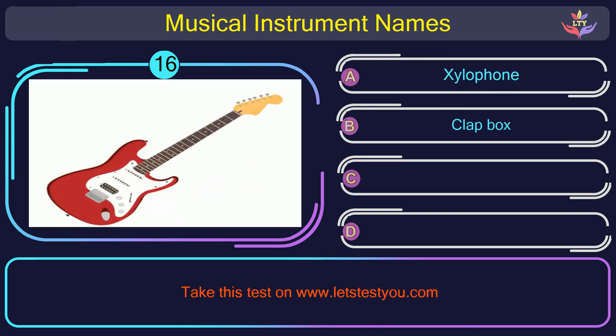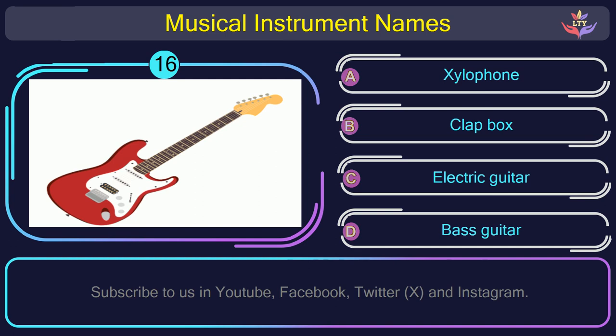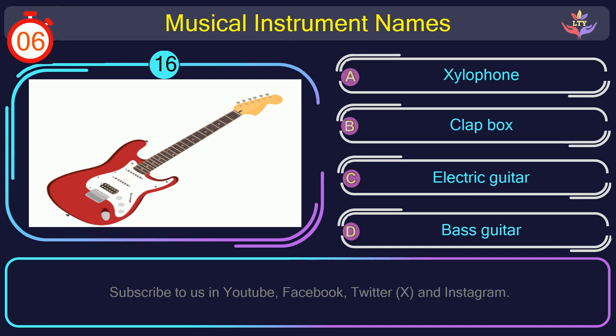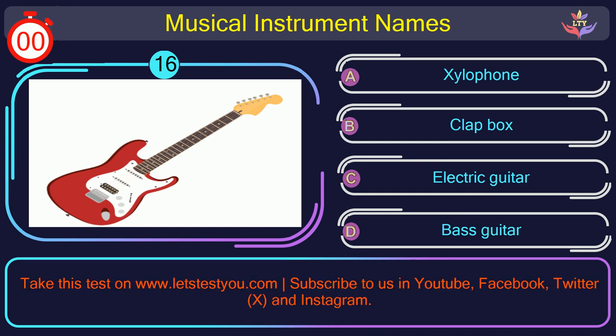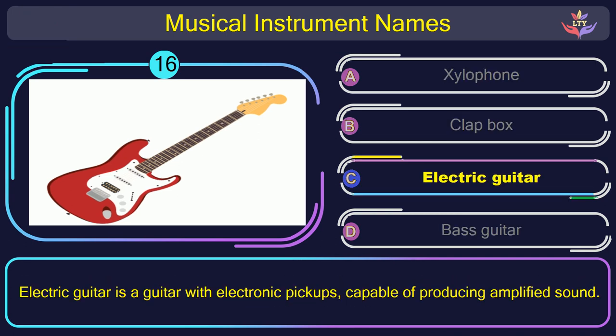Question number 16. Could you figure out the name of the musical instrument in this picture? The correct answer is option C: Electric guitar. Electric guitar is a guitar with electronic pickups, capable of producing amplified sound.